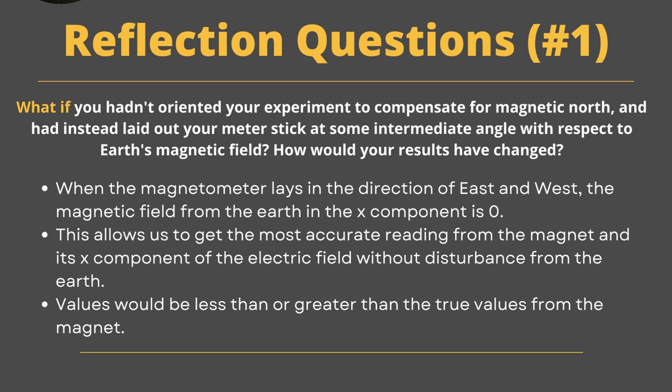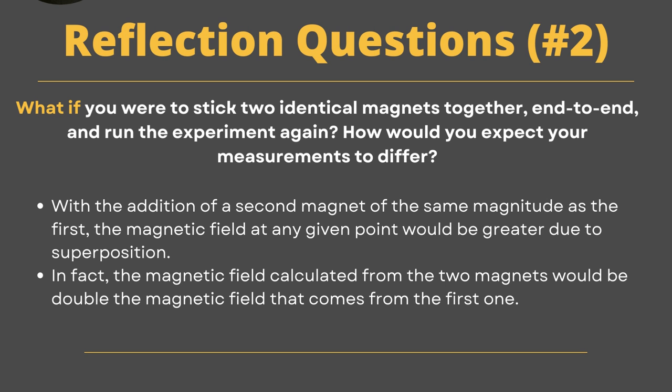Finally, if we were to stick two magnets together and put them at the end of the ruler, our actual magnetic field would be twice that of the magnetic field that was coming from the singular magnet, and overall our values would just be doubled. So this is it.